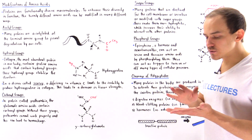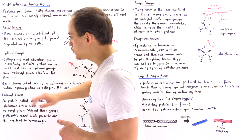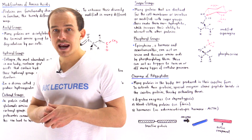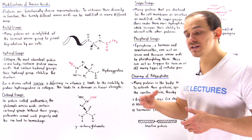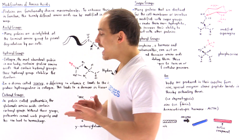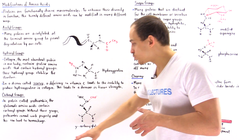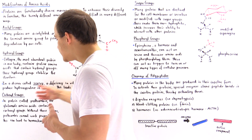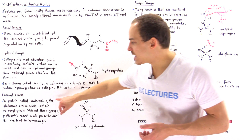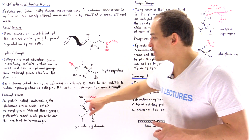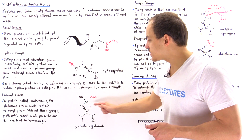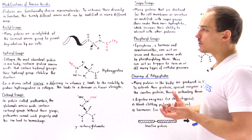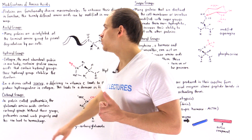Many different proteins inside the body can be modified by the addition of carboxyl groups. One particular example is prothrombin, an enzyme in the blood clotting cascade. Prothrombin is needed to stop bleeding, and if it can't function, we get a condition known as hemorrhage. If the glutamate amino acid in prothrombin cannot be modified by carboxylation — the addition of a carboxyl group — prothrombin will not be active and cannot carry out its function, leading to hemorrhage.